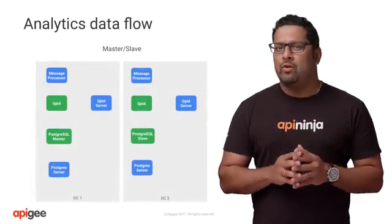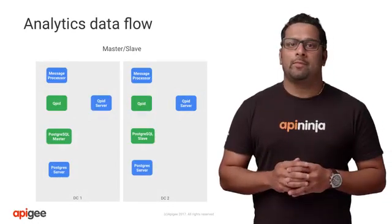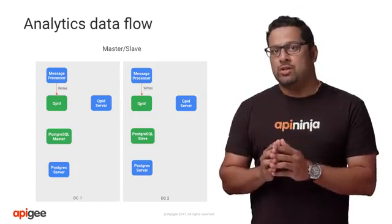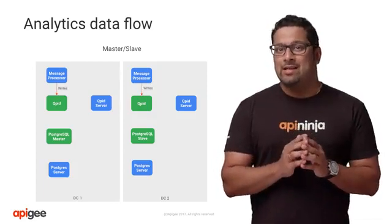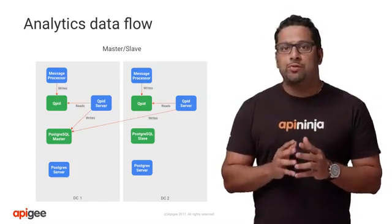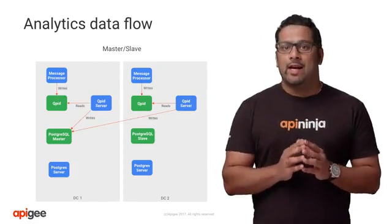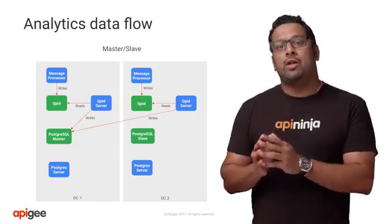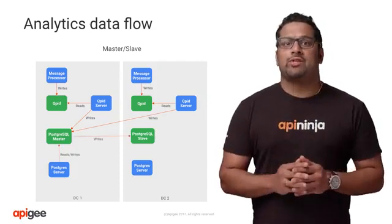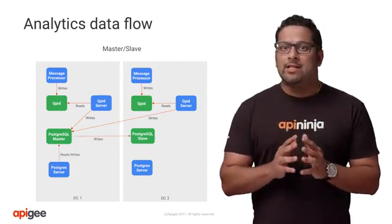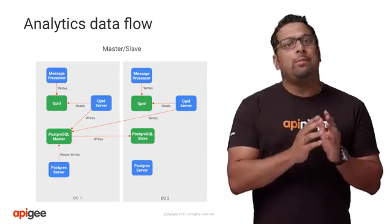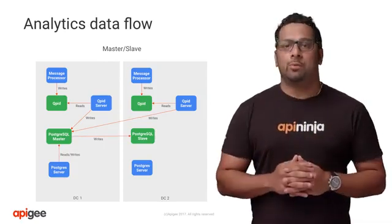Similar to the API flow, let's cover the analytics flow. The data is generated by the message processor and is asynchronously sent to Cupid. Cupid server consumes the analytics raw data and writes it onto the Postgres SQL database. Postgres server aggregates the data and writes it into the Postgres SQL master database, which can be used to query and generate different reports.